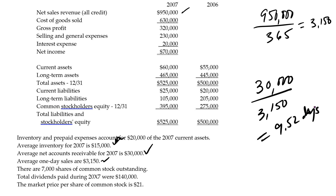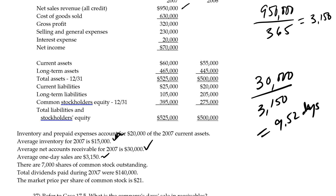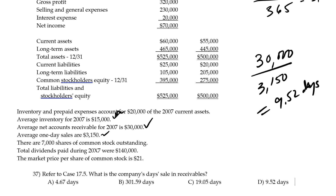What this means is we are collecting our accounts receivable about every 10 days, and this could be very good. Most companies usually have payments within 30 days, so if we're collecting our cash every 10 days that is a very fast method. It means we're getting that cash faster, we can buy more inventory, and we can really accelerate our operating cycle. And the answer is right there.